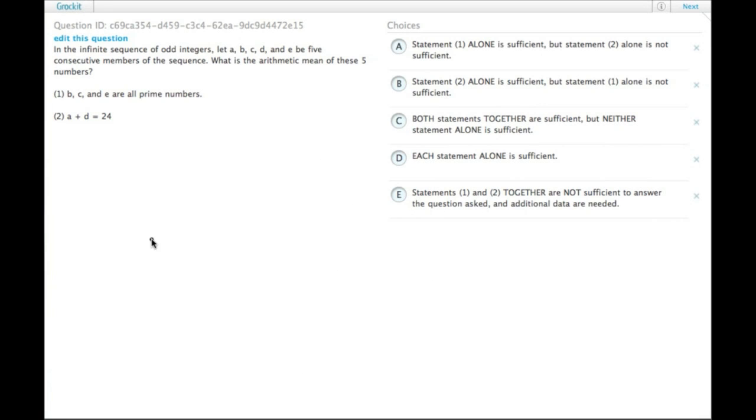So we have an infinite series of odd integers. So we have A, B, C, D, and E. Consecutive members in the sequence, what is the mean of the five numbers?